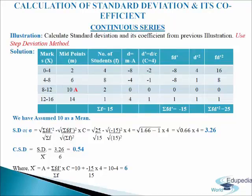Now we come to CSD, that is coefficient of standard deviation. The formula is SD divided by mean. We will calculate mean: a plus sigma fd dash divided by sigma f, multiplied by c. Putting in the values we get 6 as actual mean. So 3.26 divided by 6 gives us 0.54 as CSD. This is how we calculate standard deviation and its coefficient in continuous series using step deviation method.